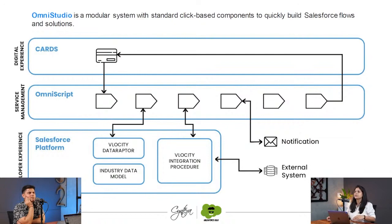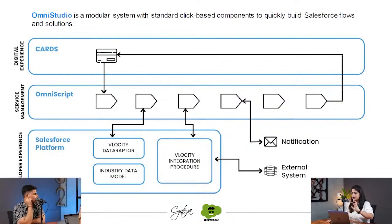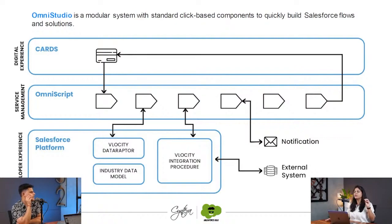Under Integration Procedure there are different actions — you just drag this action, drop it, and do some configuration on top of it. For example, if you are using email action, you will have to choose the email template and specify to whom you are sending the email — the who ID, lead ID, contact ID, or whatever. So Integration Procedure takes care of all of these things, and it can be called from an Omni Script. You build one complex functionality and that is just one part of your Omni Script — in the complete guided path, it's just one step.